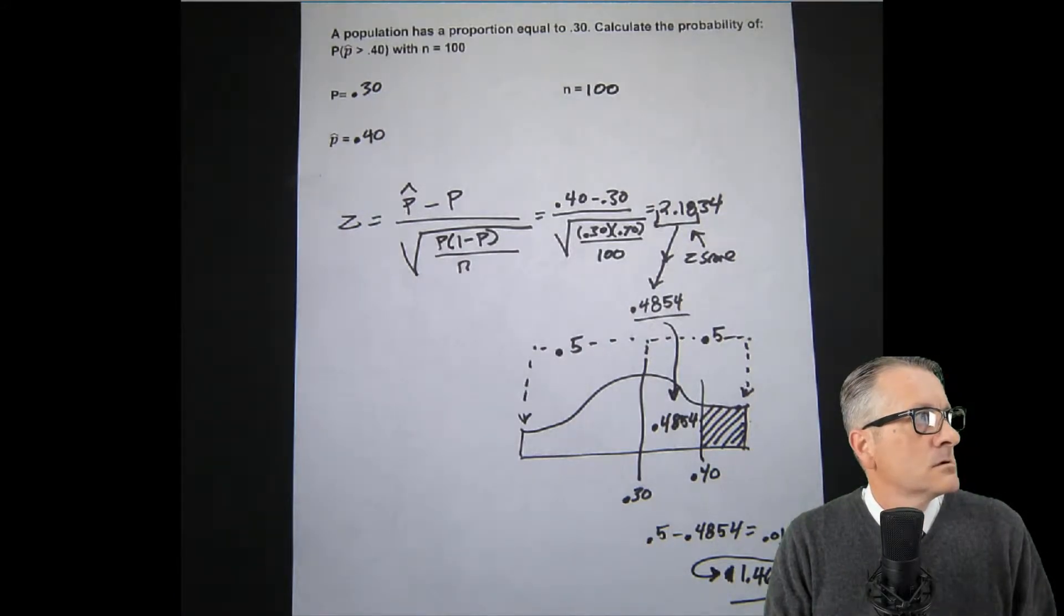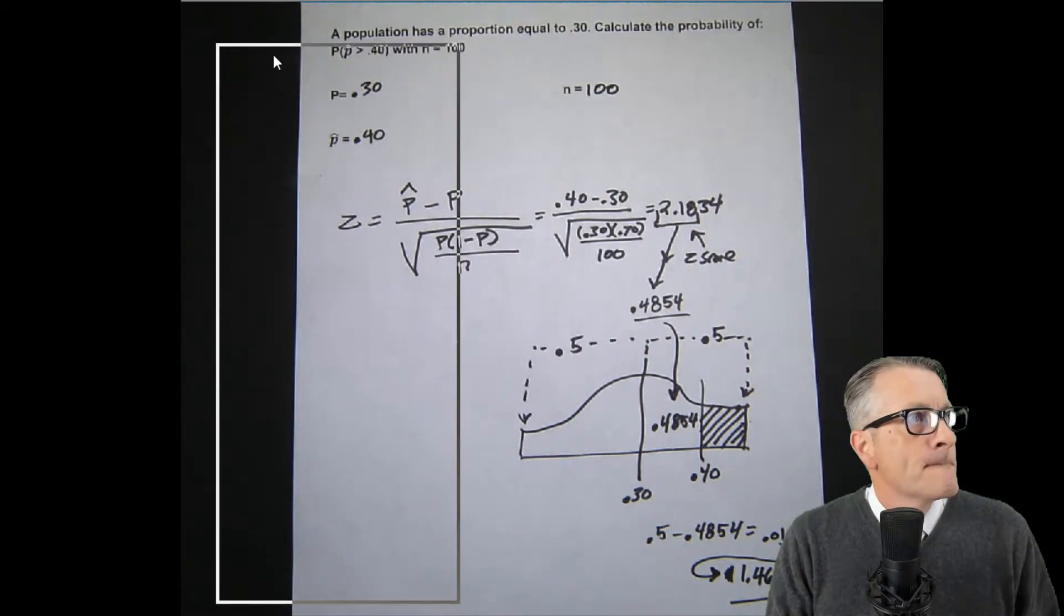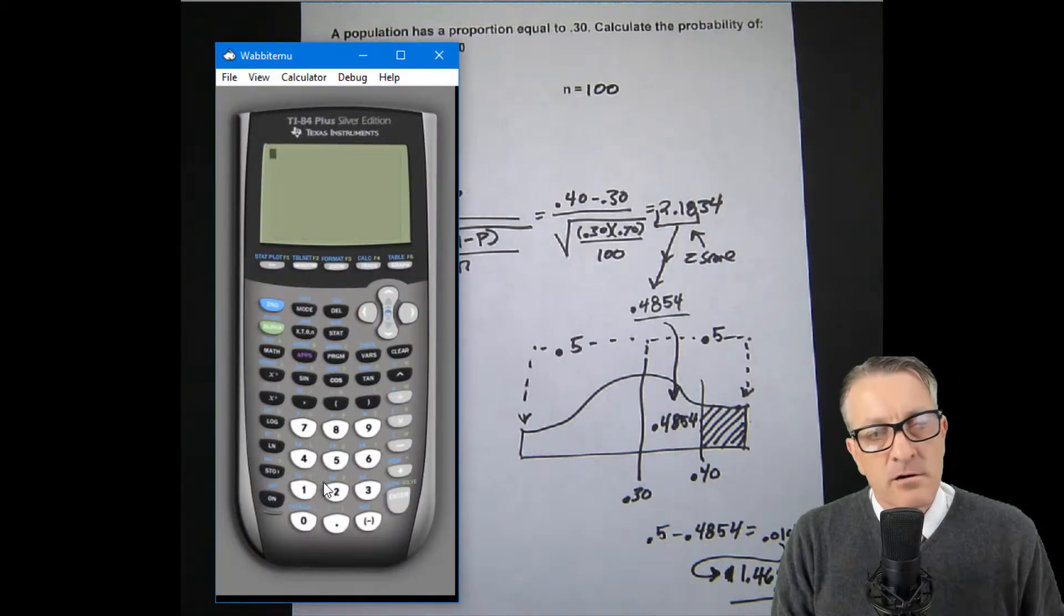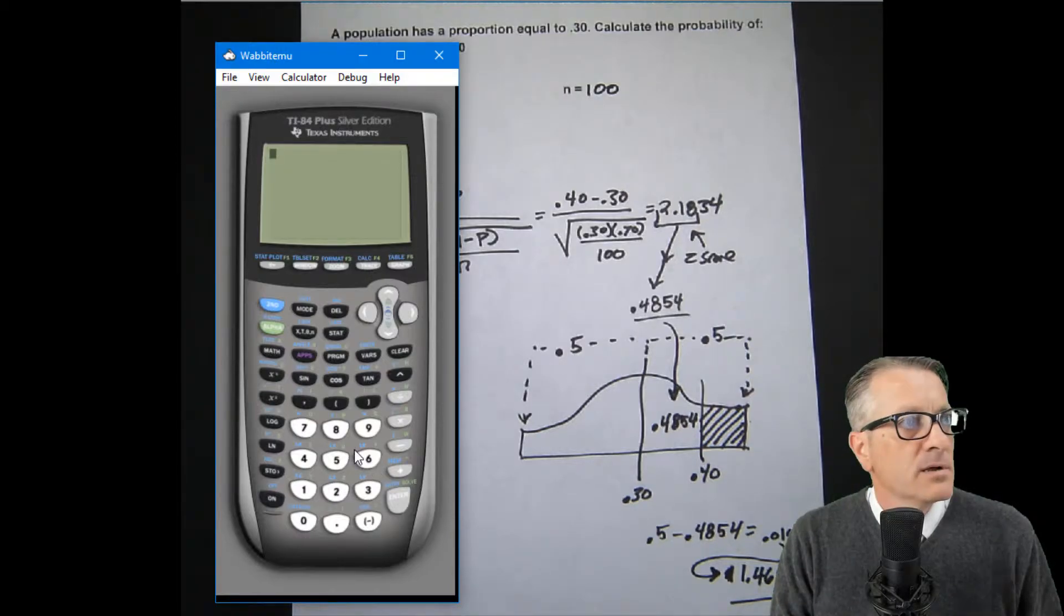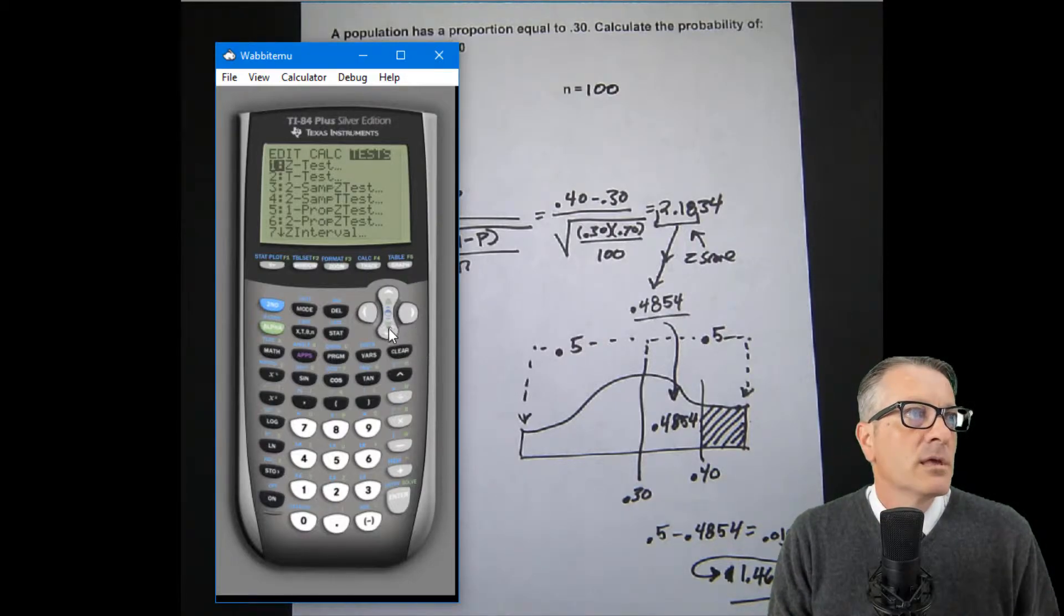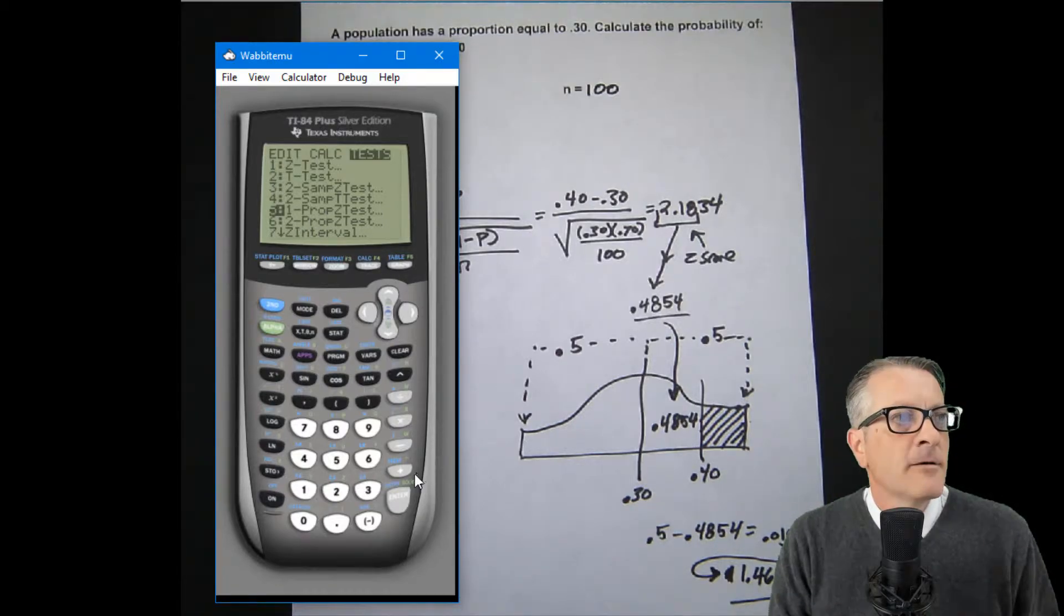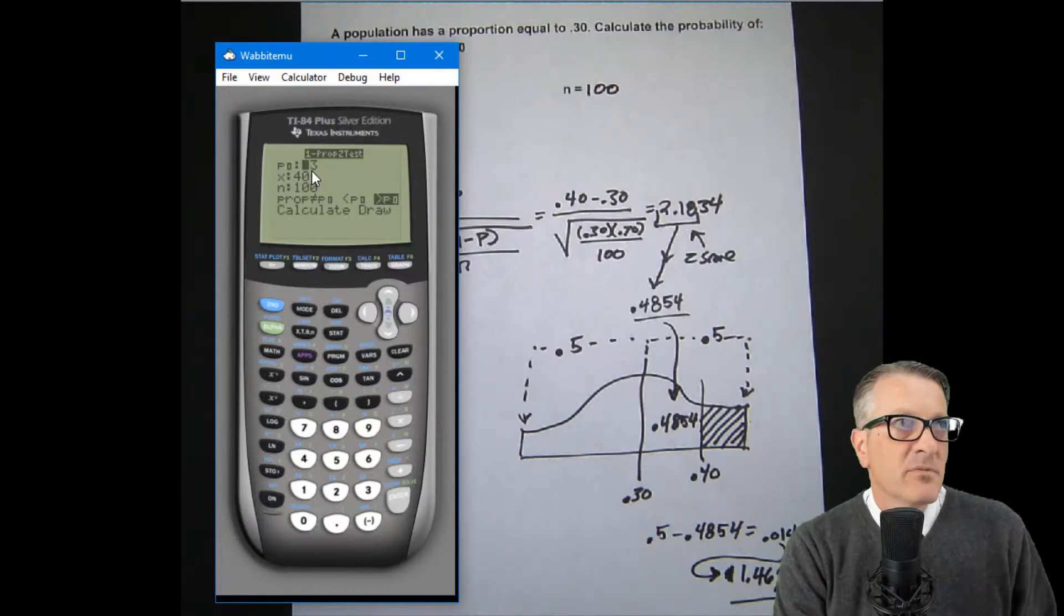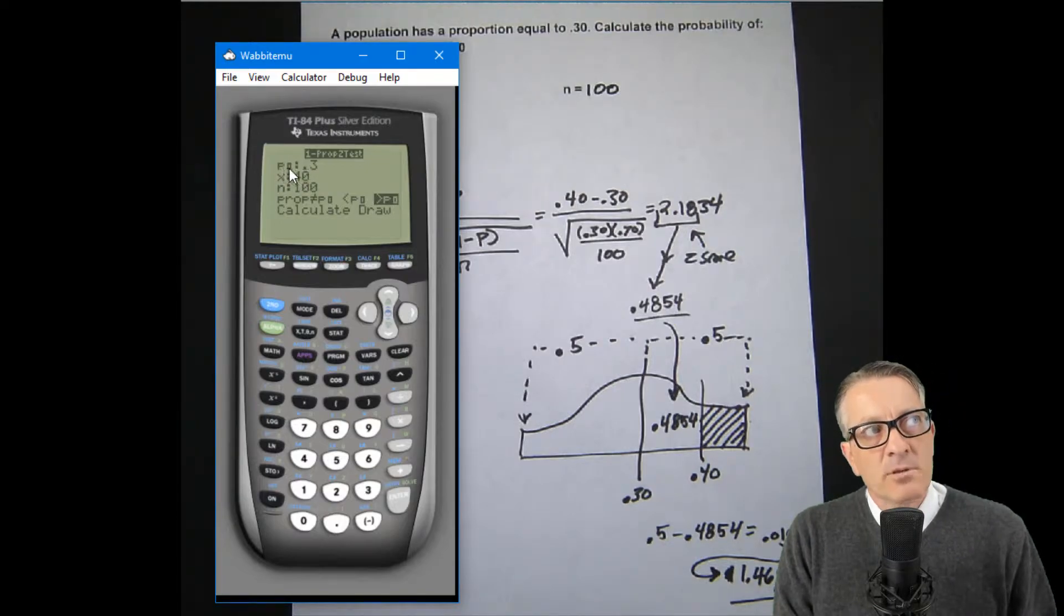On the calculator, we use a function called the 1-PropZTest. That's in stats, and we go to the right twice, and then we go down to 1-PropZTest and hit enter. I already have the data in here, so it's not quite as intuitive as some of the interfaces on the TI-84.